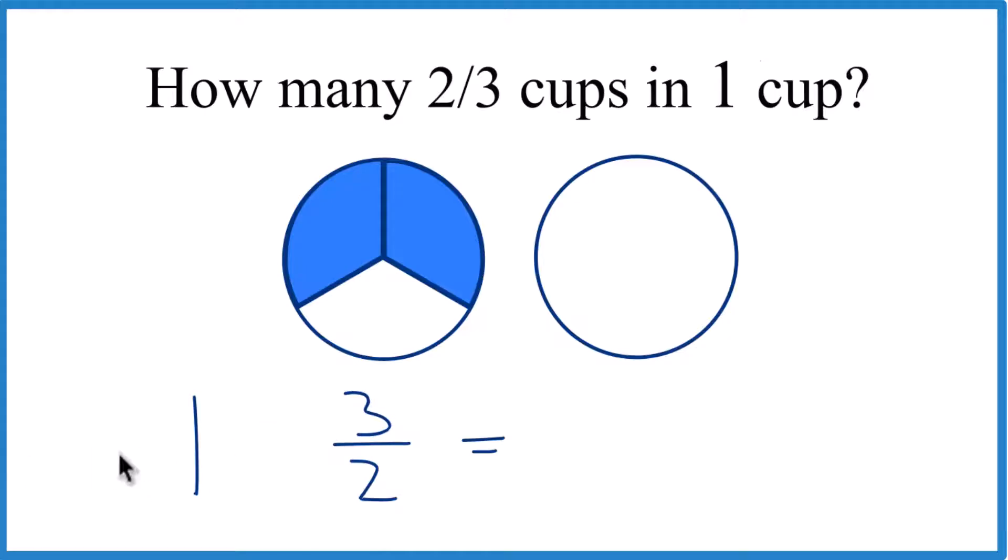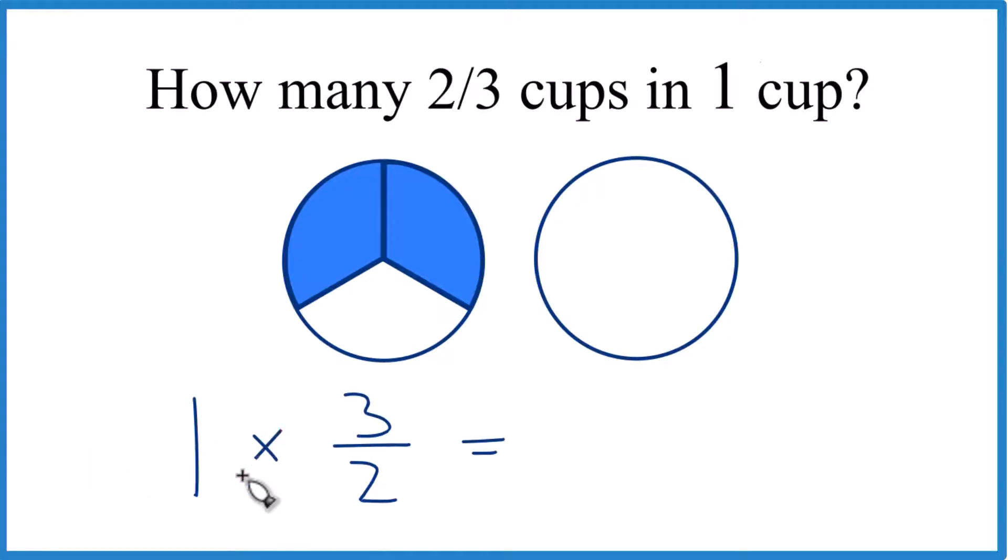Because then instead of division, we just multiply. So one times three over two, that's three over two.